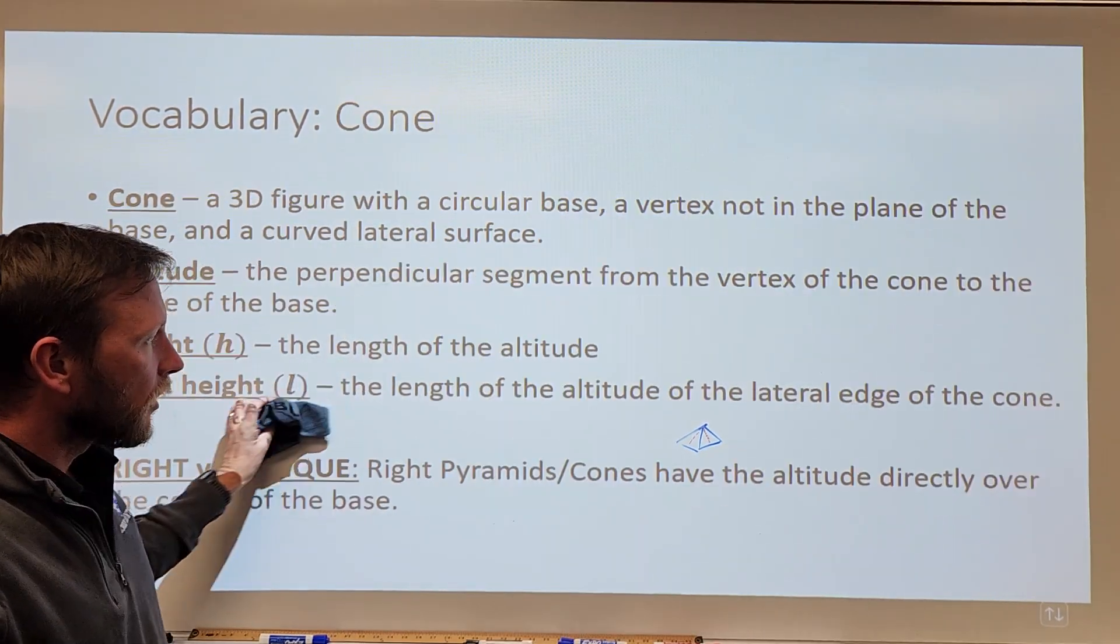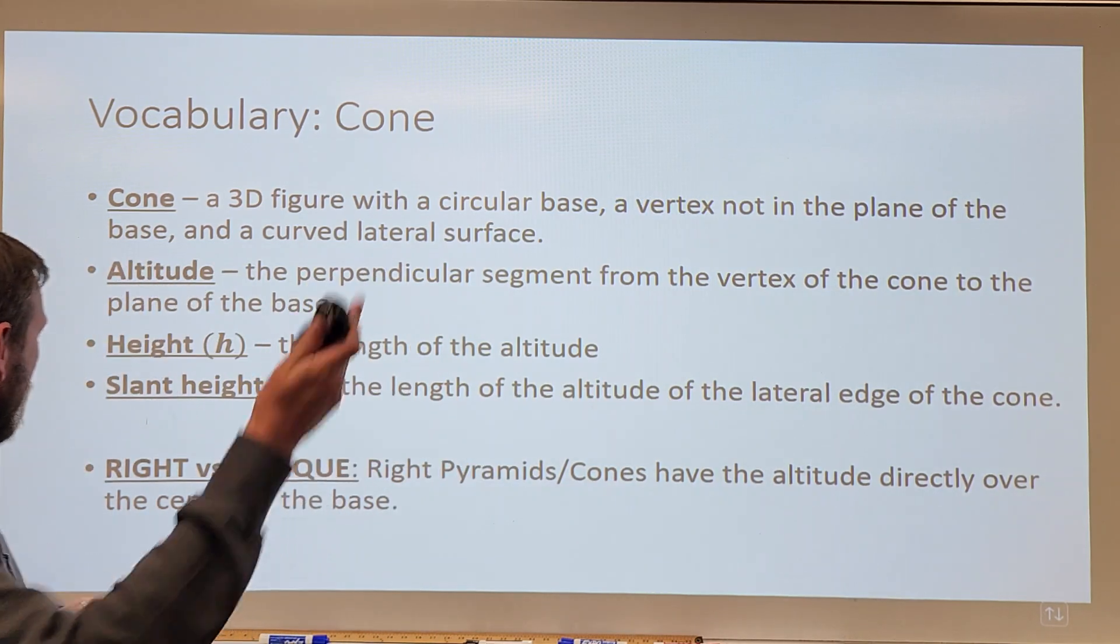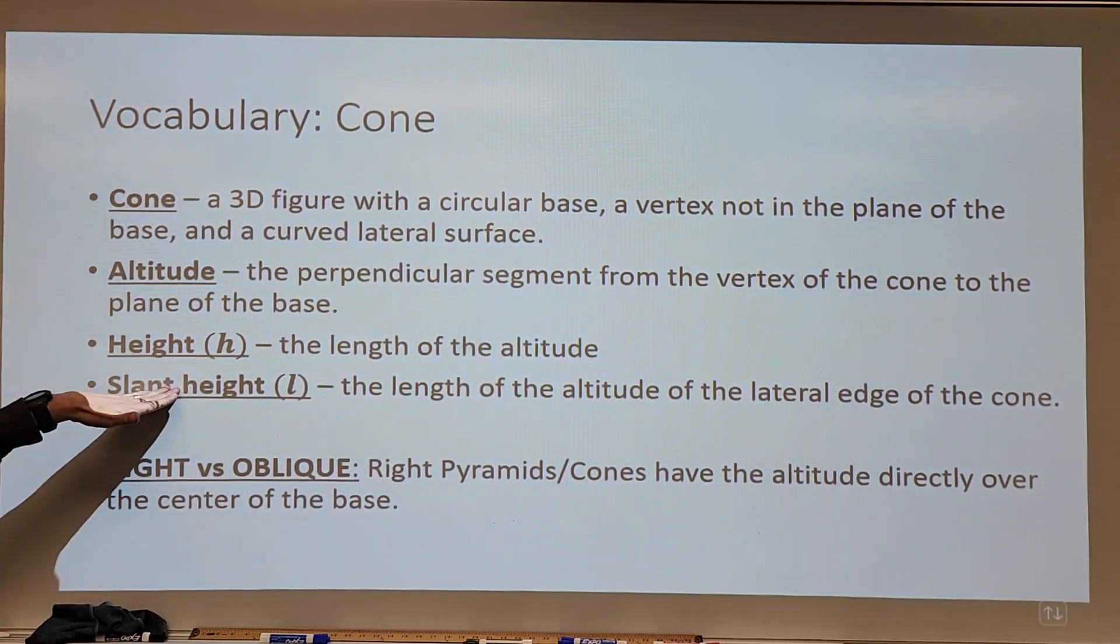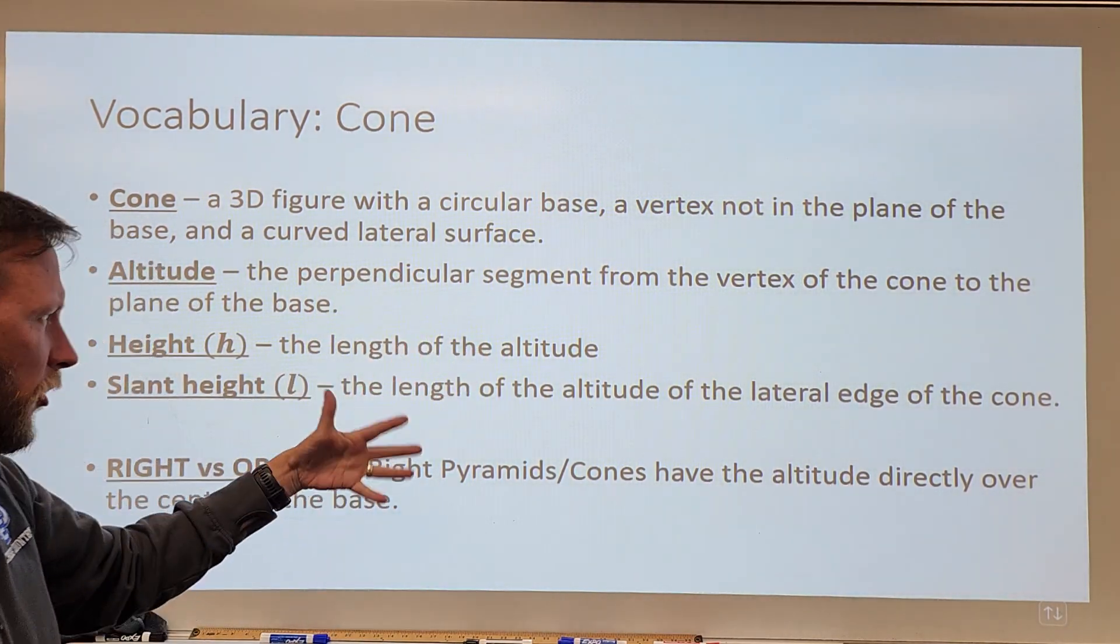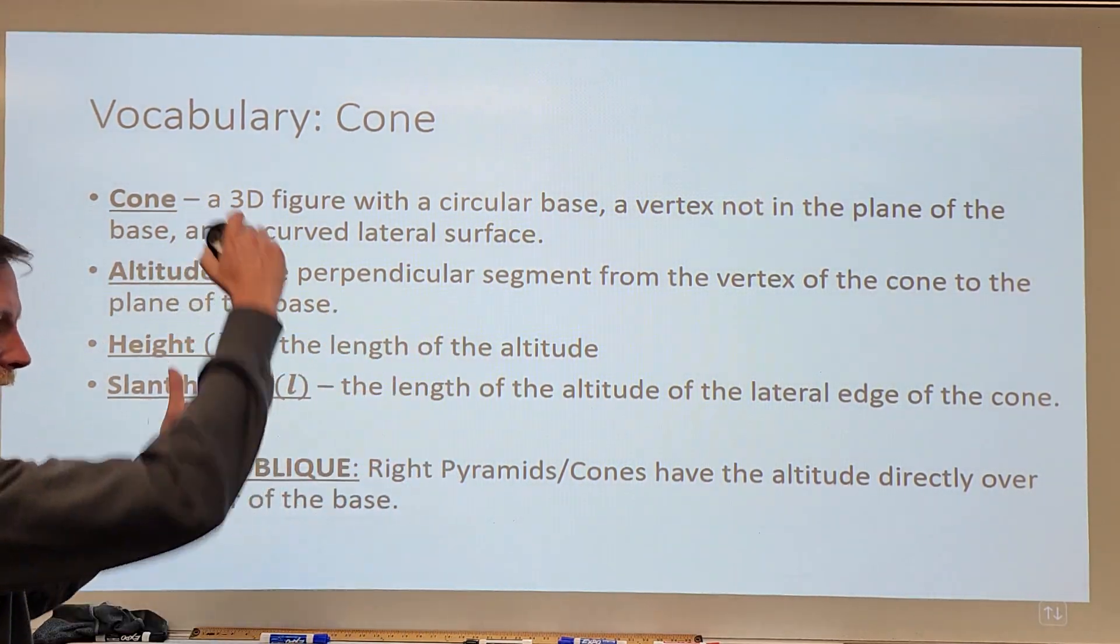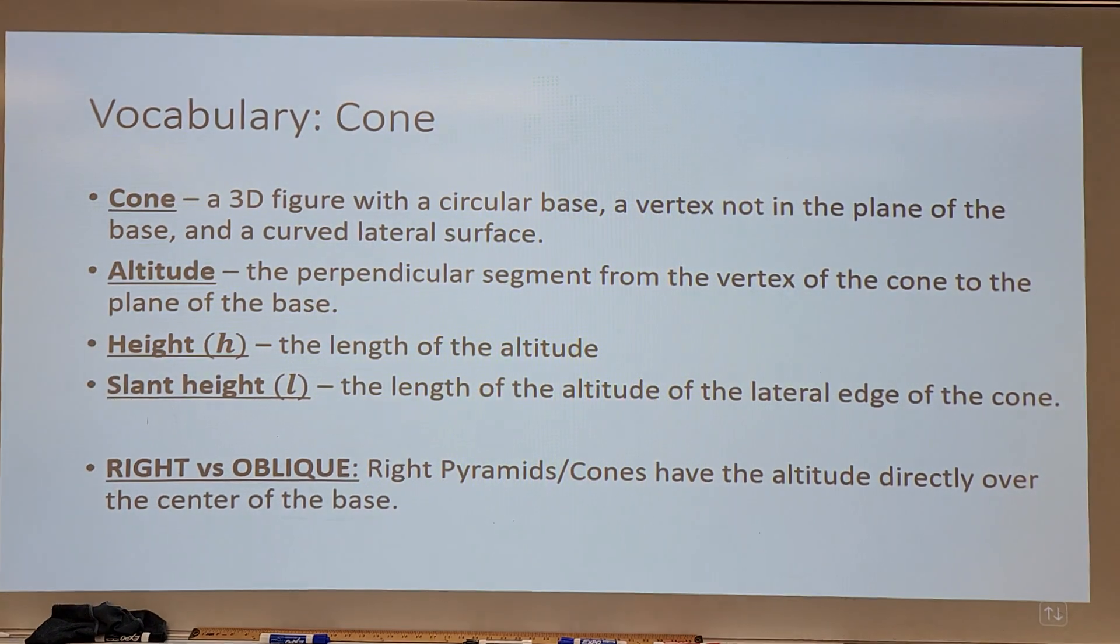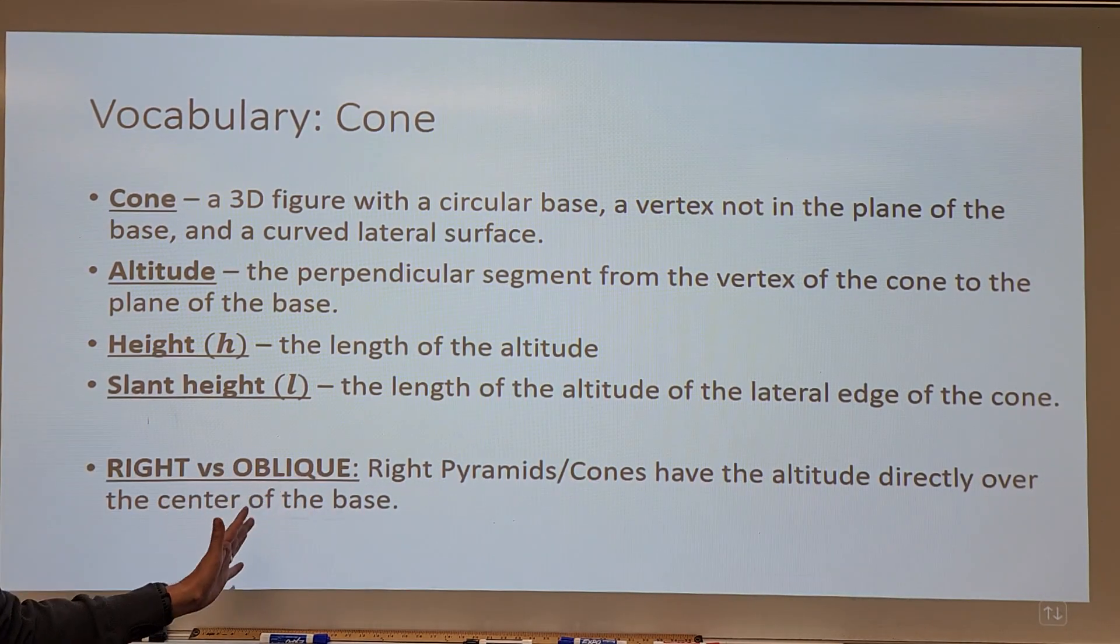So, with that in mind, and we also have the cone. So here we've got the cone, we know what a cone is functionally. The slant height is the length of that lateral edge on the cone because there's not a triangular face, and so that edge is the same all the way around. The height, again, is the length of that altitude, we know what the altitude is, and then again, right versus oblique.